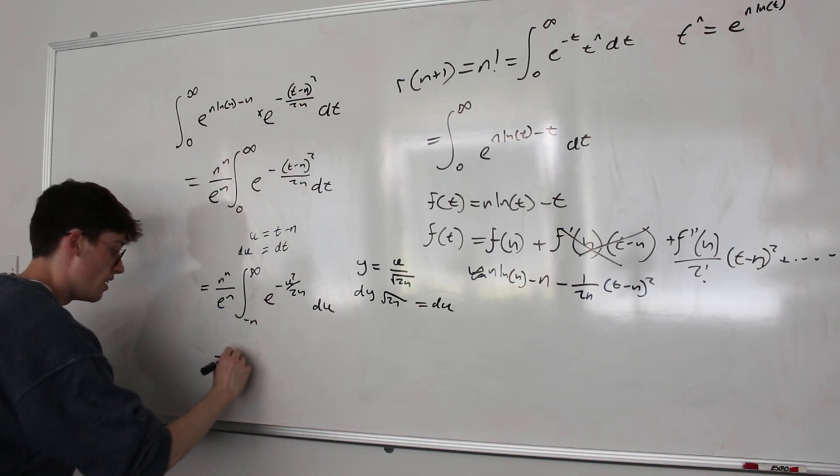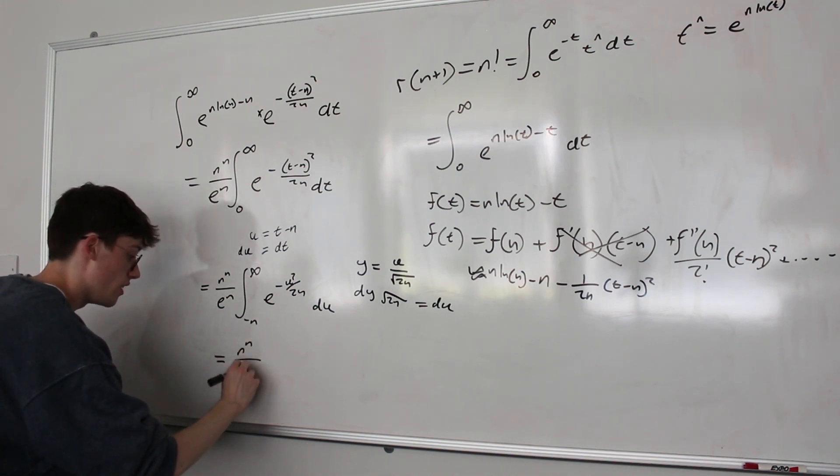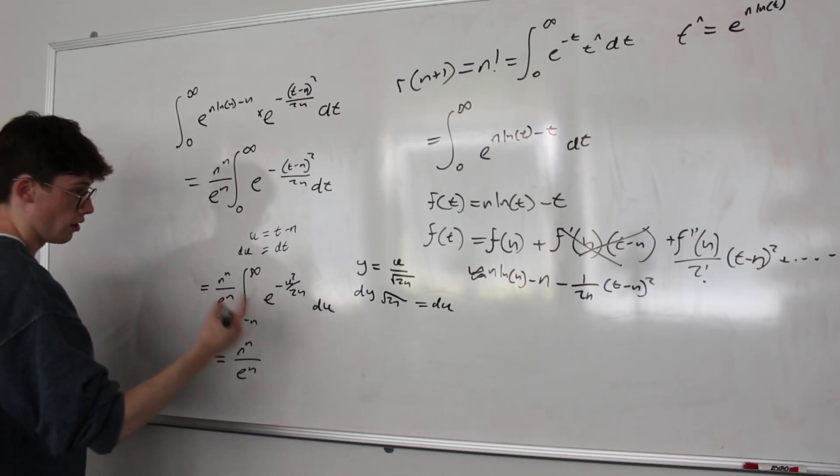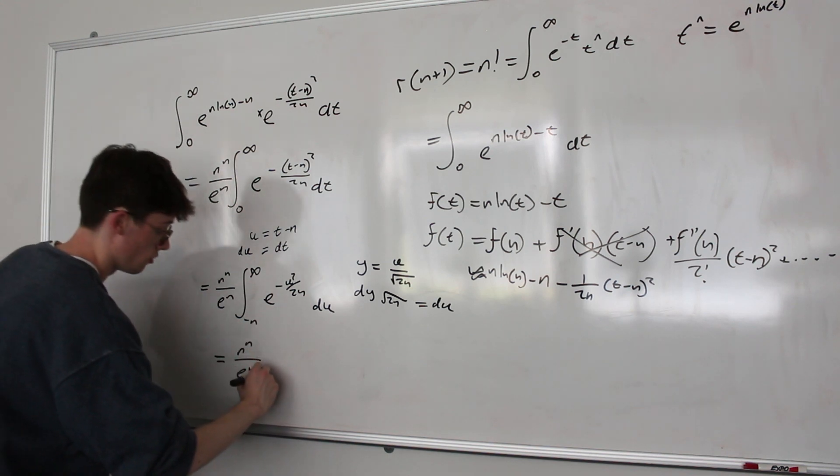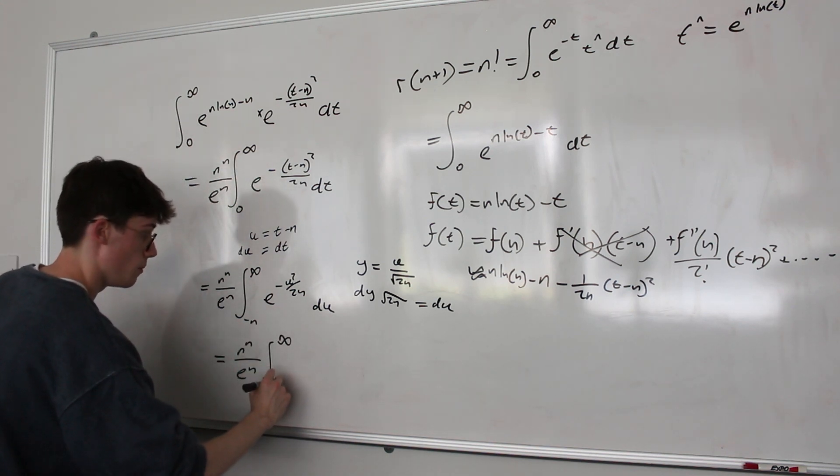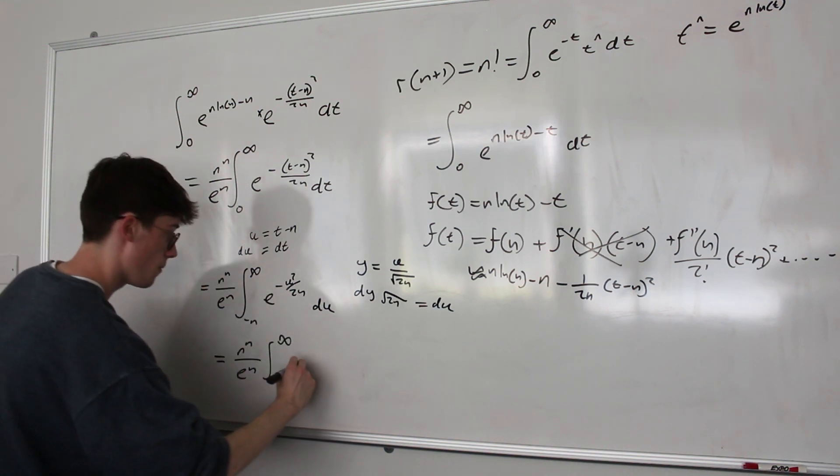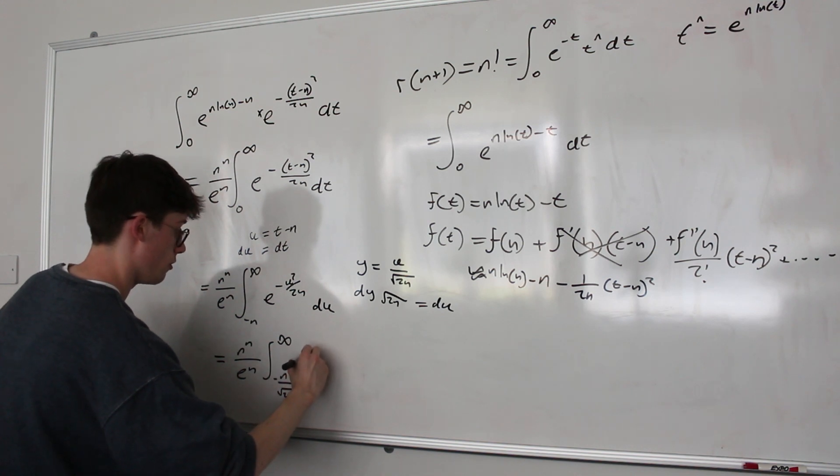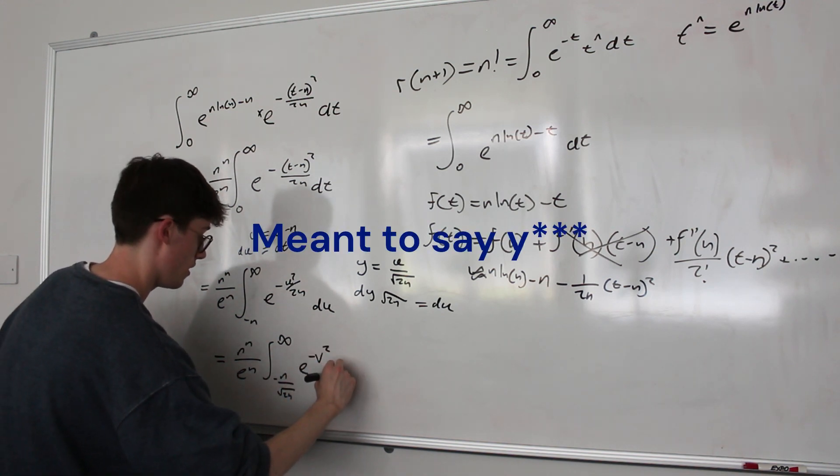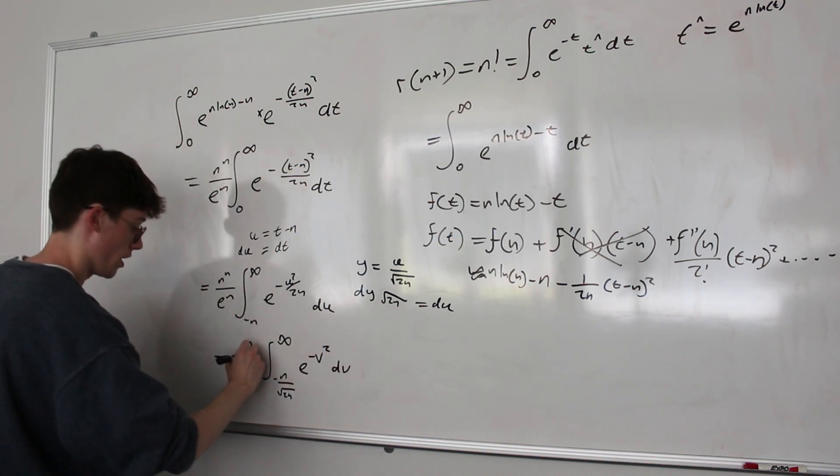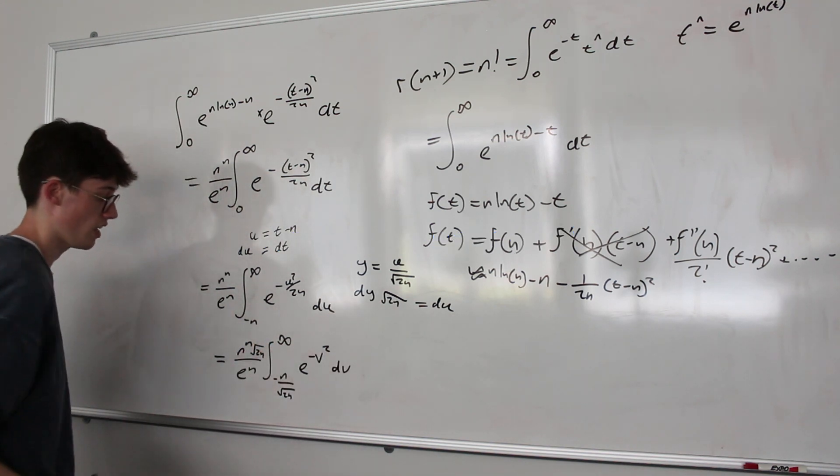So this, again, is equal to n to the n over e to the n, times by the integral from, well, it's going to be negative n over root 2n to infinity, of e to the power of negative y squared dy, but we've got to remember also we're multiplying by a root 2n over here.